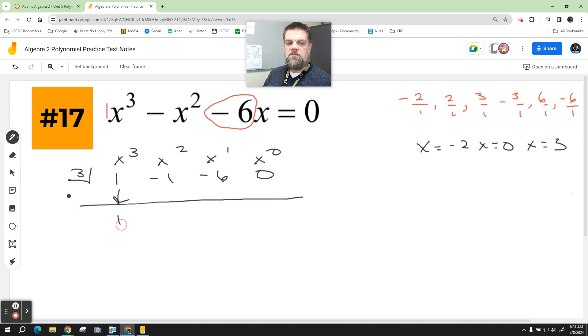Drop down the 1. 3 times 1 is 3. Add those up, this is a positive 2. This times this is a positive 6. Add those up, this is 0. This times this is 0. Remainder of 0.